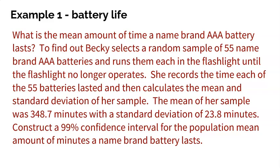Let's look at an example that we're going to use here to walk you through a one-sample t-interval. What is the mean amount of time a name-brand AAA battery lasts? I mean, there's got to be millions, maybe even billions of AAA batteries out there. What is the mean time that one specific brand lasts? So to find out, Becky selects a random sample of 55 name-brand AAA batteries and runs them each in a flashlight until the flashlight no longer operates. She records the time each of the 55 batteries lasted and then calculates the mean and the standard deviation of her sample. Now, here comes some important numbers I'm going to need. The mean of her sample was 348.7 minutes. The standard deviation of her sample was 23.8 and we're asked to construct a 99% confidence interval. Those are really the only three numbers you're going to need to do this.